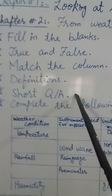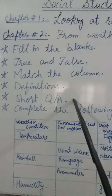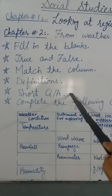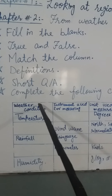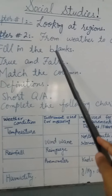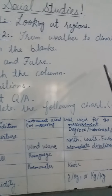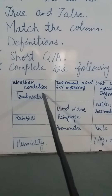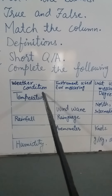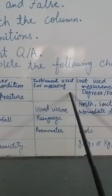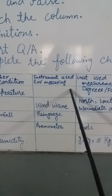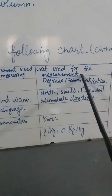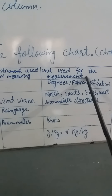Short question answers — all these things are included in your first online assessment. Plus, there is another question in chapter number two — 'From Weather to Climate' — which is: complete the following chart. In this chart, the first column has weather conditions, the second column has the instrument used for measuring, and the third column has the unit used for the measurement.